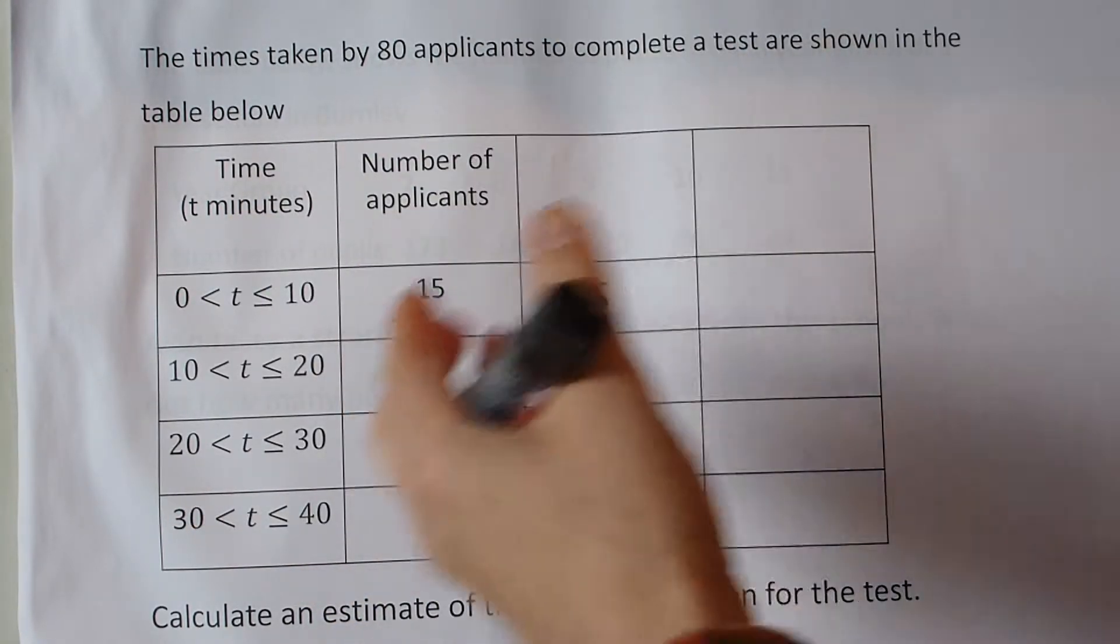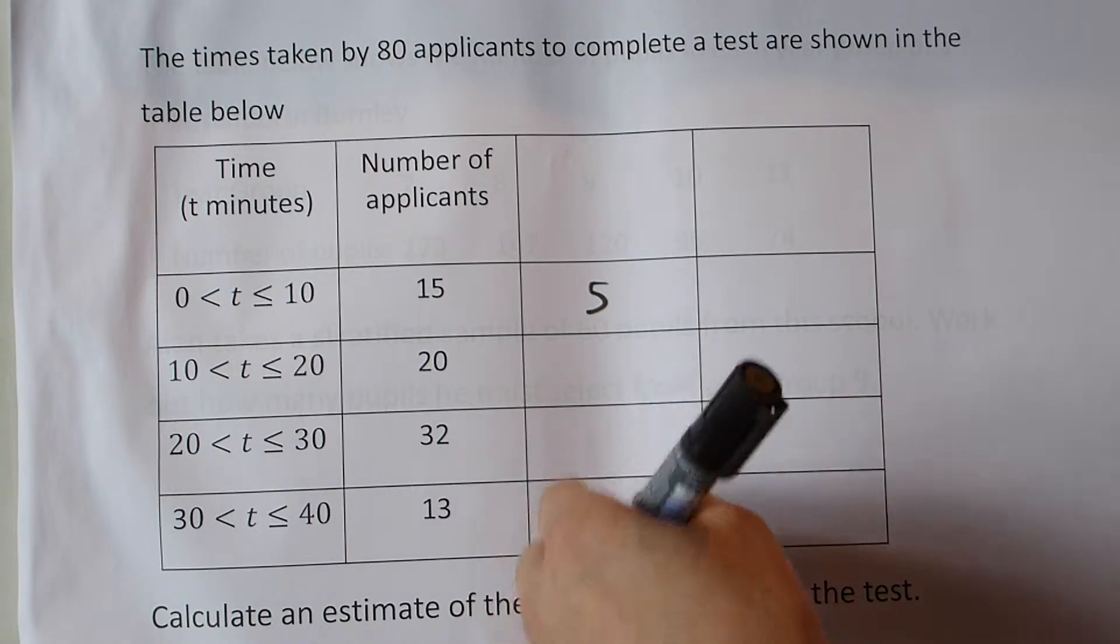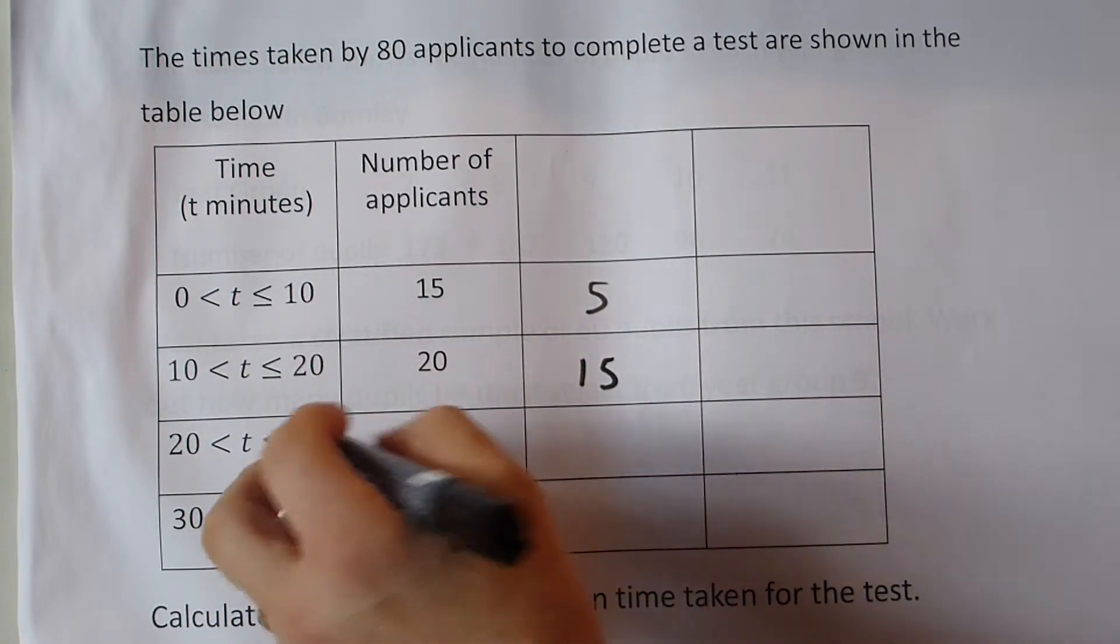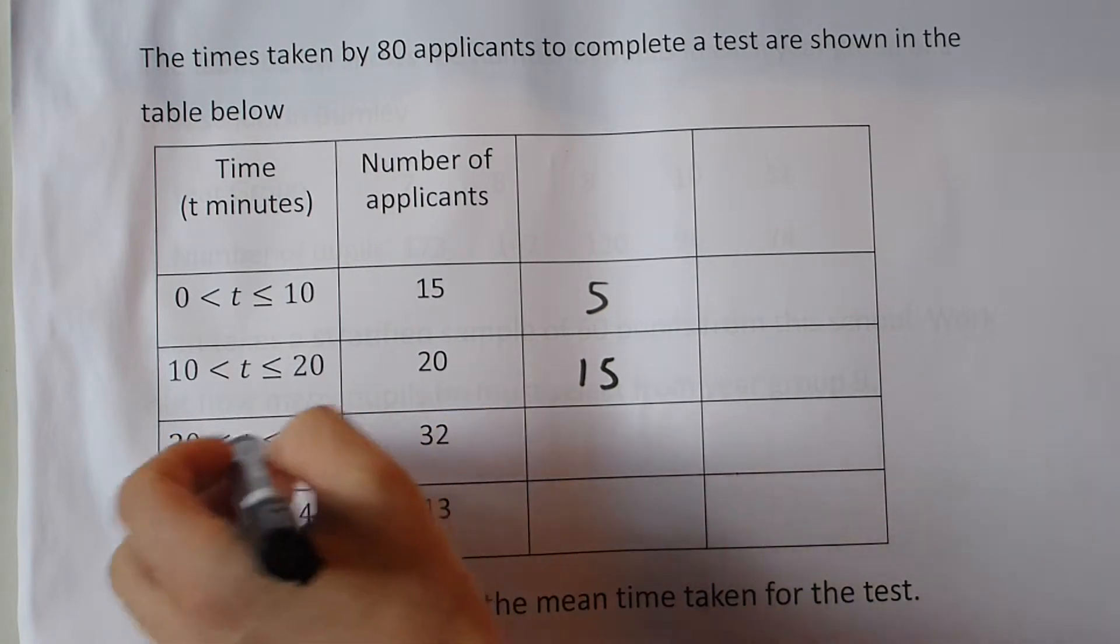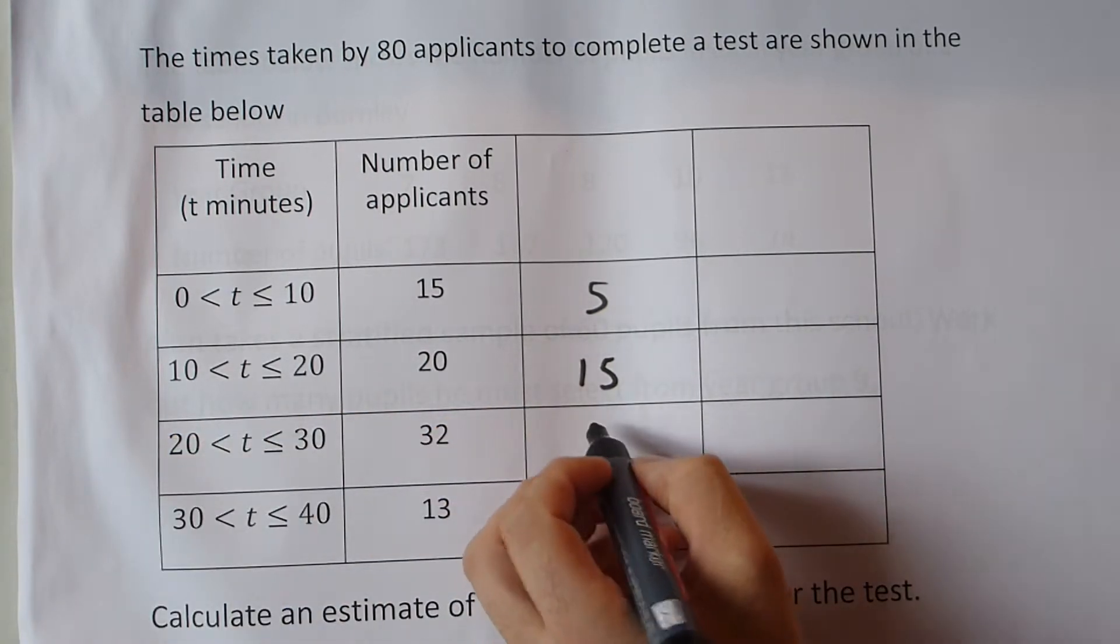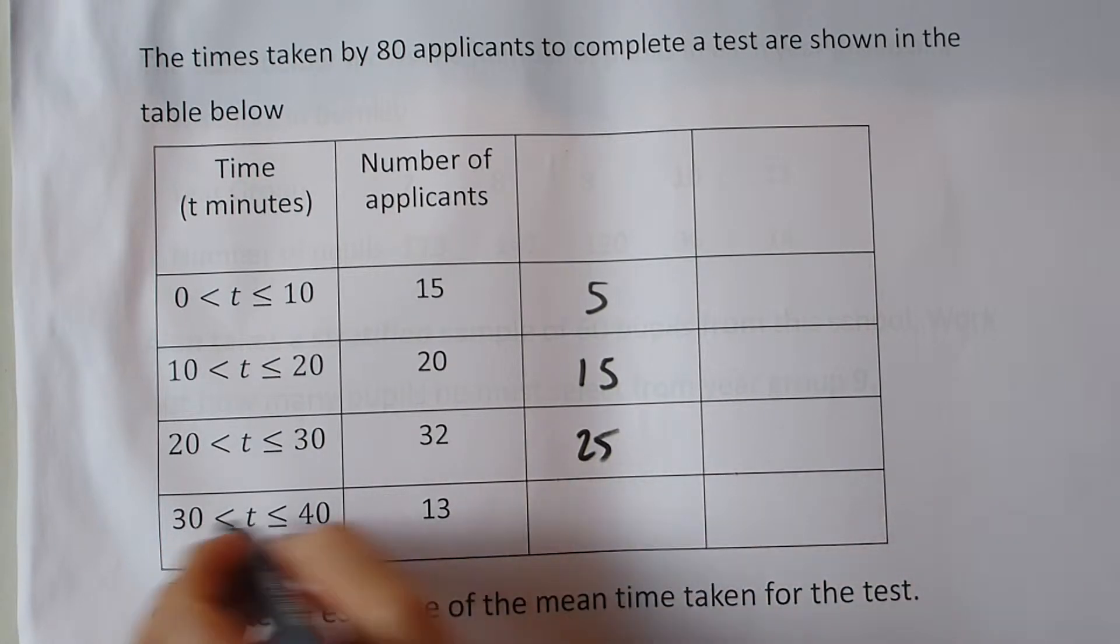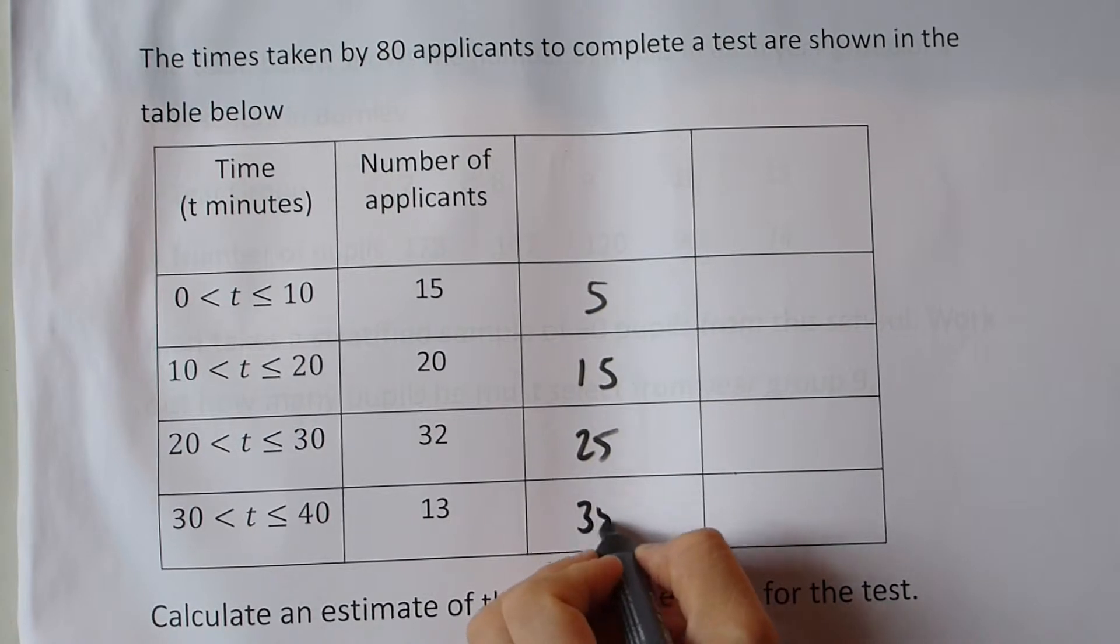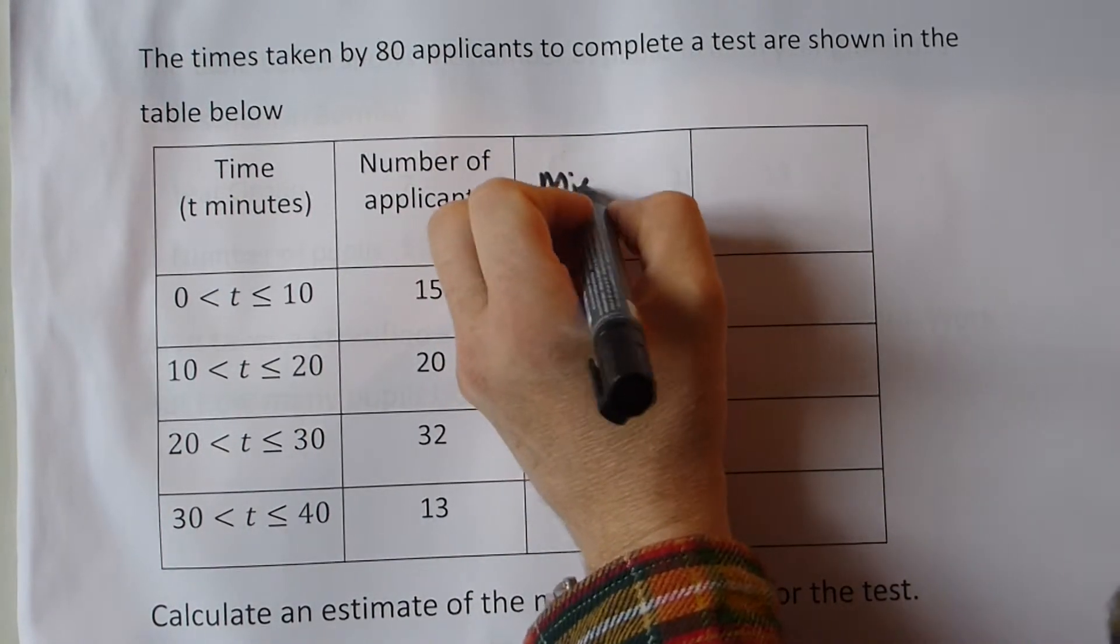For these 20, we're going to estimate that it's 15 minutes. For these 32 applicants, we're going to estimate that on average they take 25 minutes. And likewise with the last 13 applicants, that they take on average 35 minutes. So here we look at the midpoint.